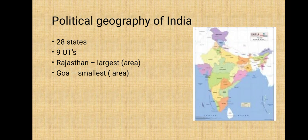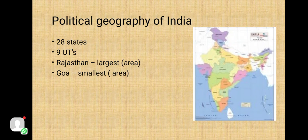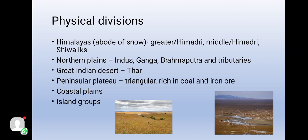As India is a vast country, for administrative purposes the country is divided into 28 states and nine Union Territories. Delhi is the national capital. The states have been formed mainly on the basis of languages. Rajasthan is the largest state and Goa is the smallest state in terms of area. The states are further divided into districts for better functioning.